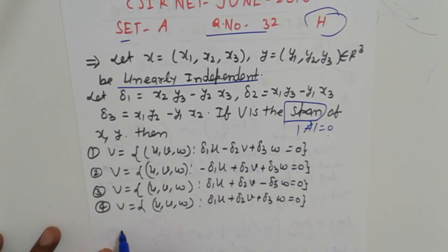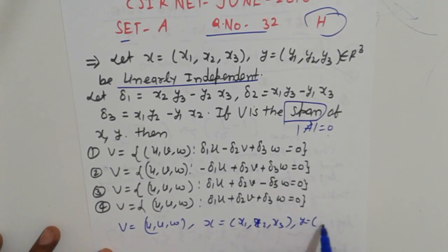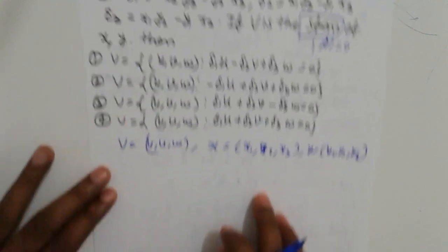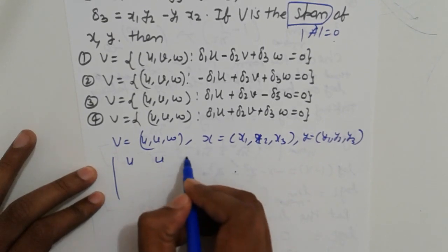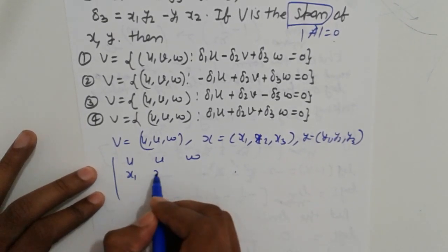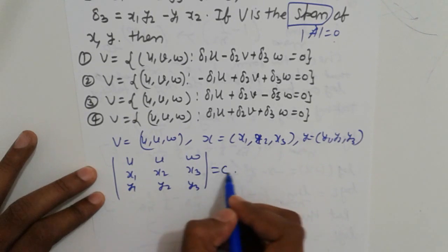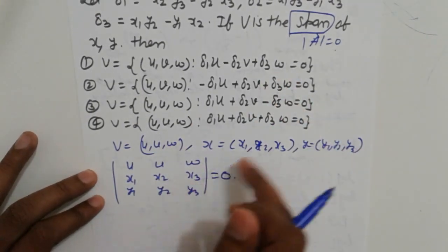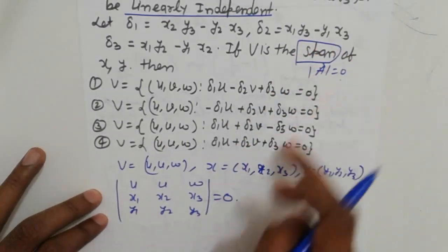The span of X and Y — here U, V, W — where X equals (X1, X2, X3) and Y equals (Y1, Y2, Y3). These are the linear span vectors. In that case, the determinant of the matrix [U V W; X1 X2 X3; Y1 Y2 Y3] is set equal to zero to find the relation between them.